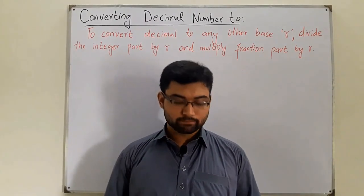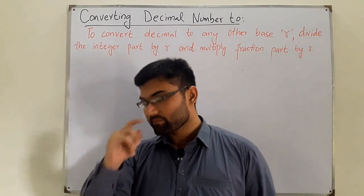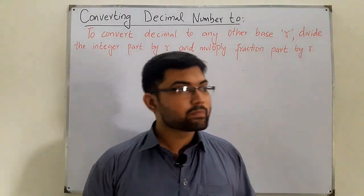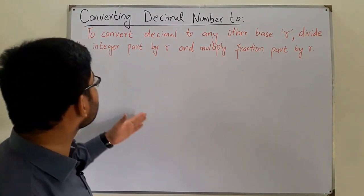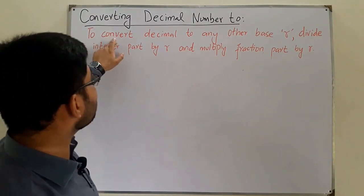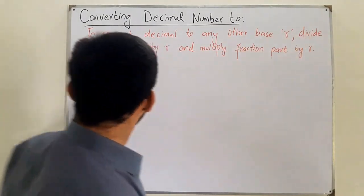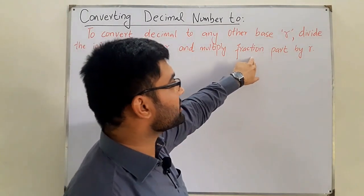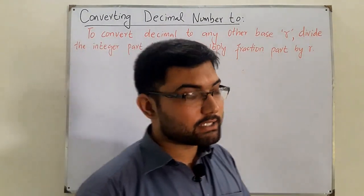Assalamu alaikum. Salam Khan here. The topic of today is converting a decimal number into other number systems. We've already seen binary number conversion, and today we see decimal numbers. We have a basic rule for decimal conversion: to convert a decimal number to any other base r, divide the integer part of the number by r and multiply the fraction part by r.